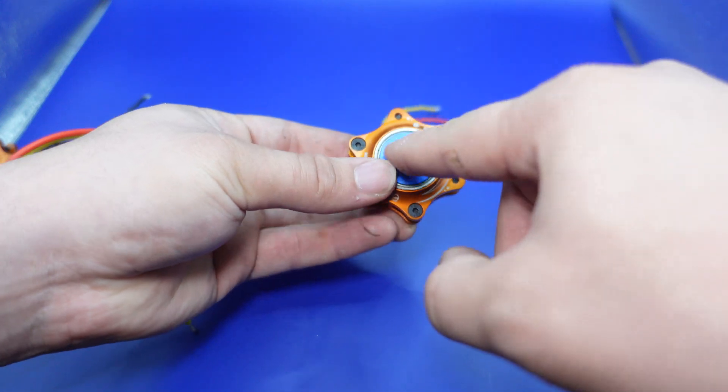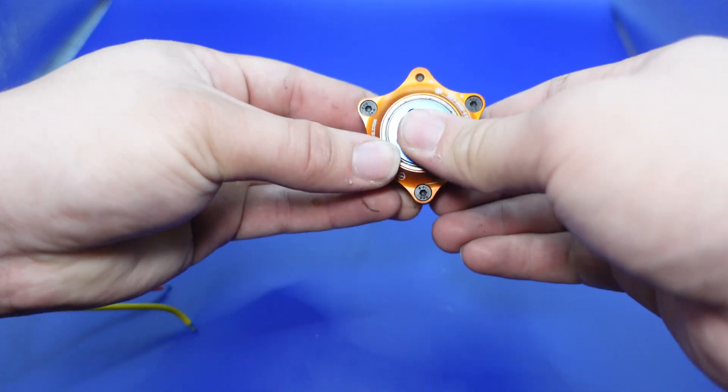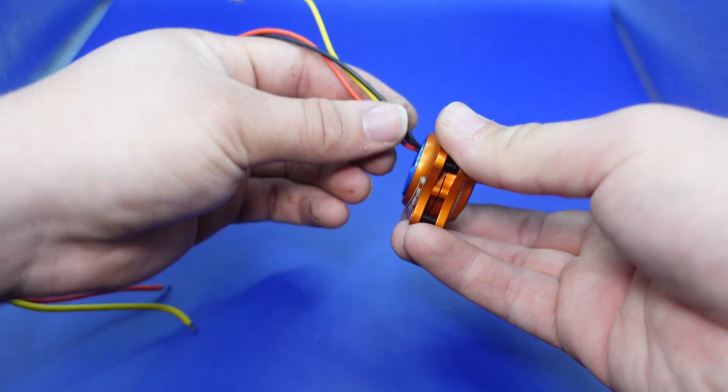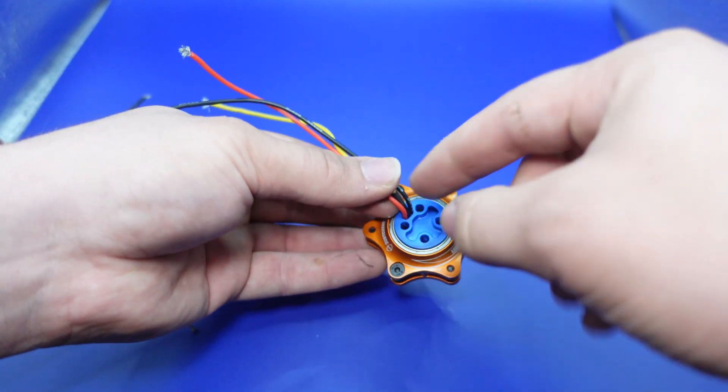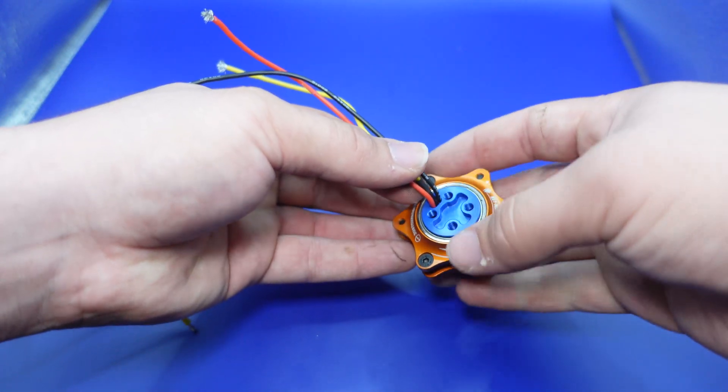The way that you use it is you use four M4 screws to mount it to your robot frame. Those screws will not be included, so you'll have to source your own. Make sure you leave a hole for the wires to get out, of course.